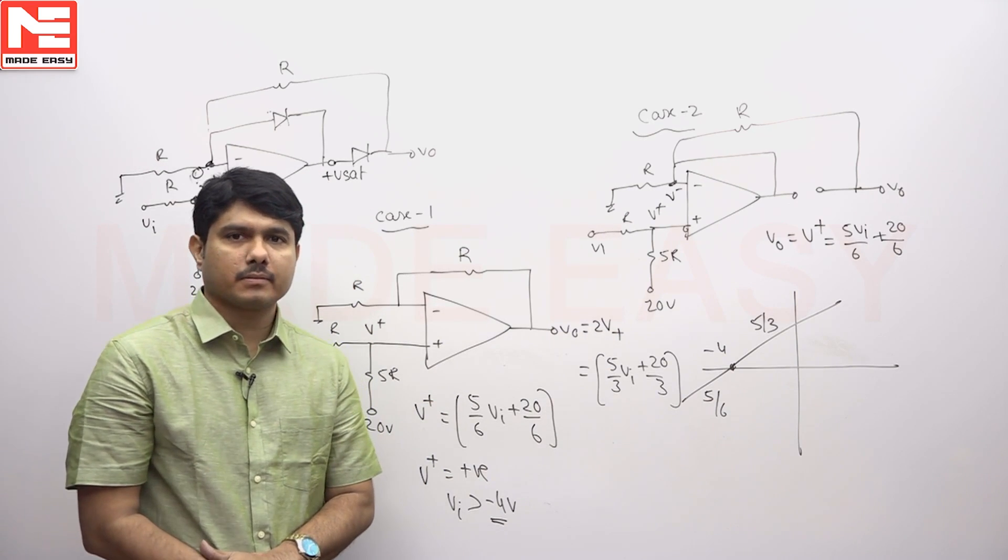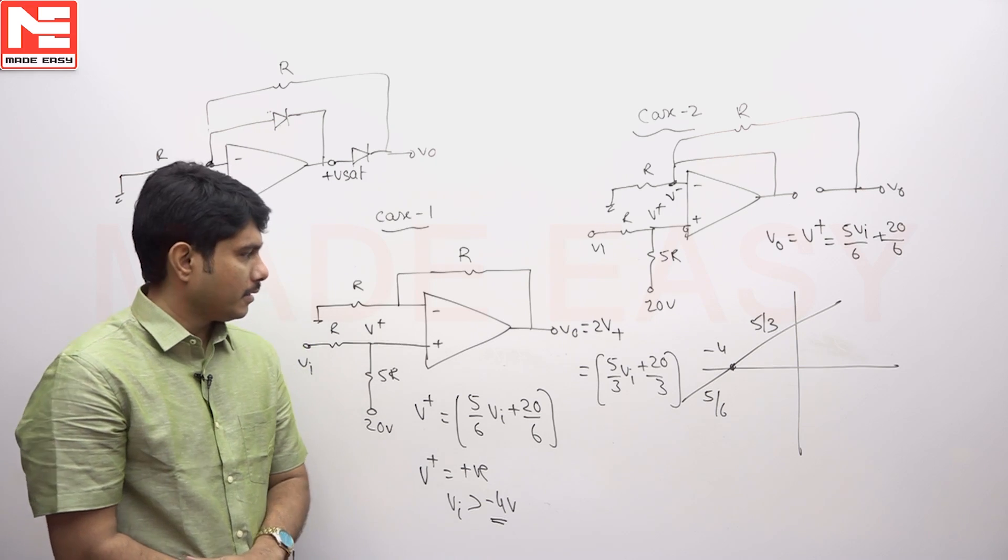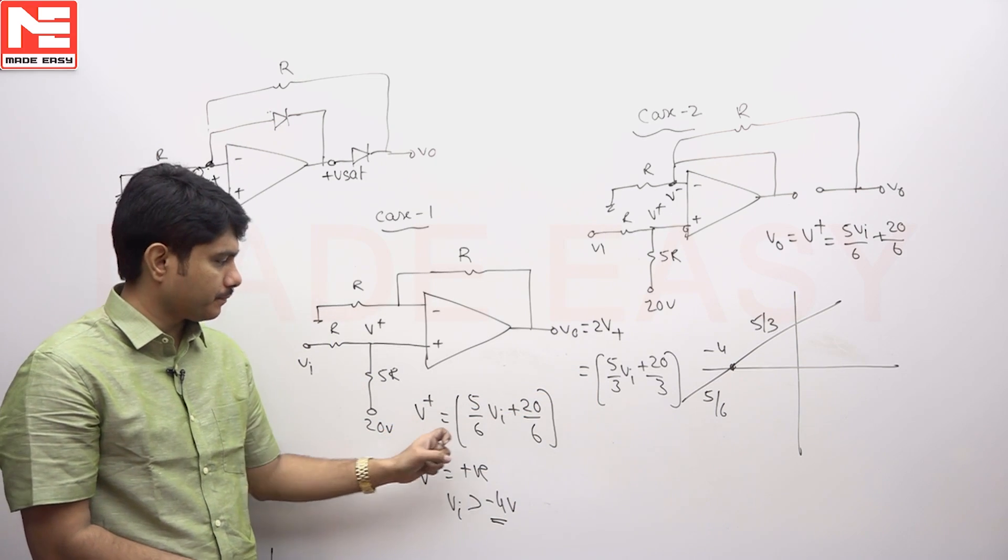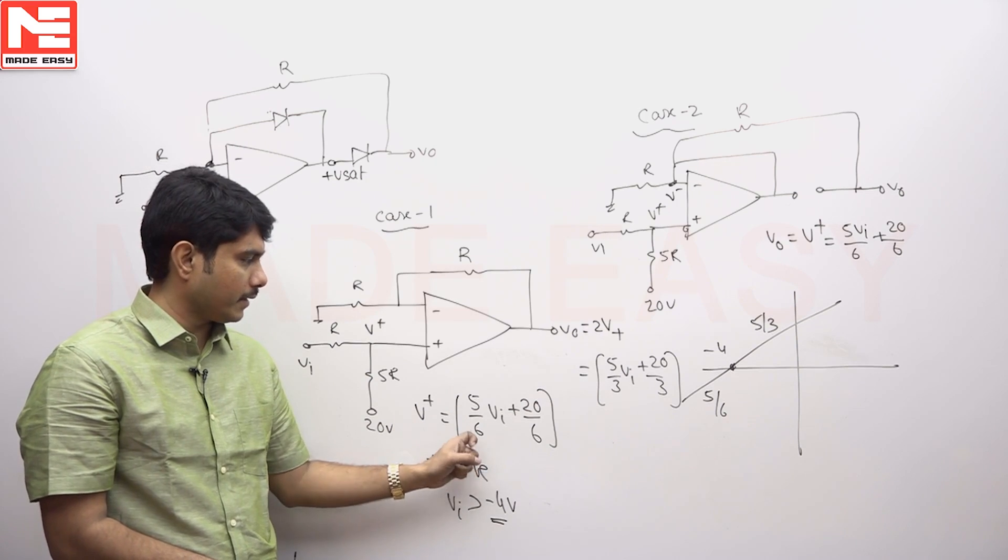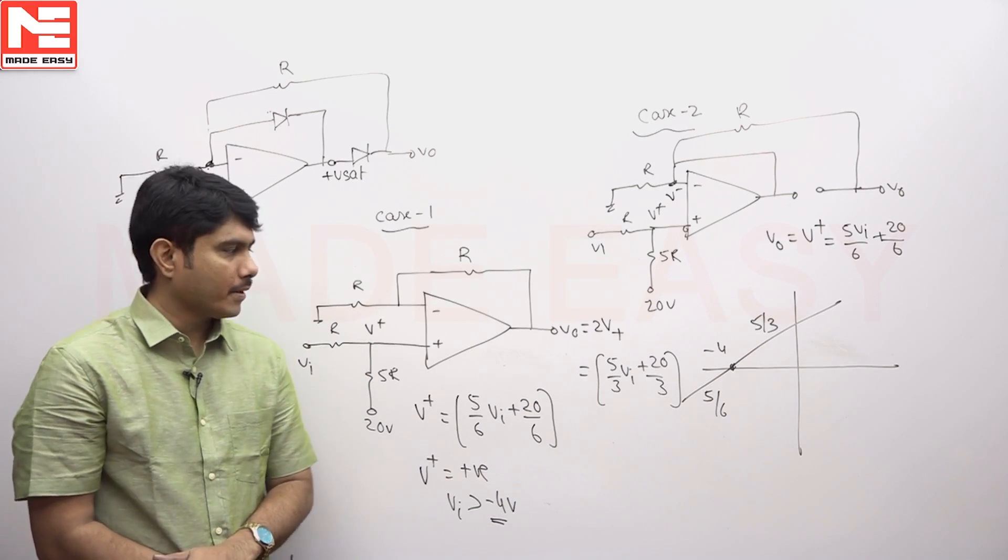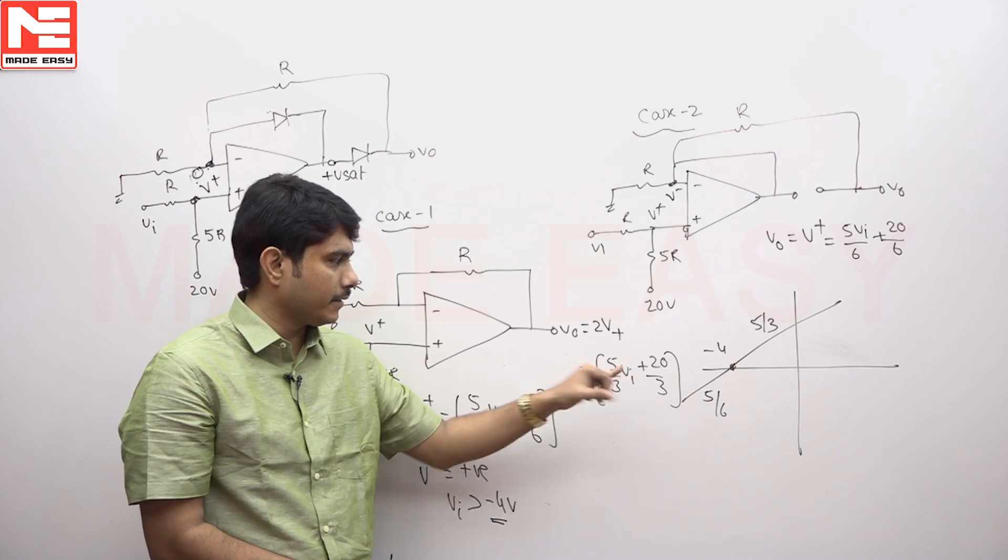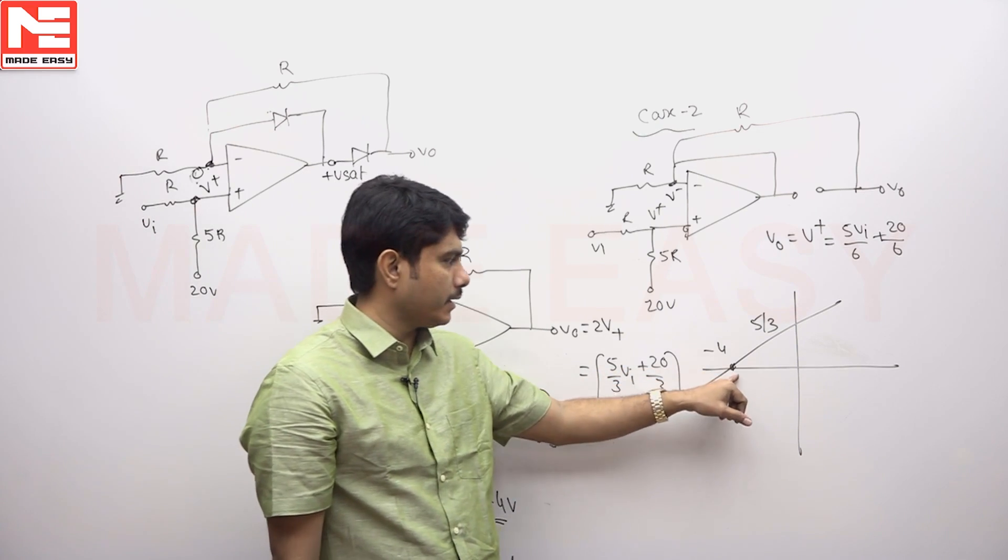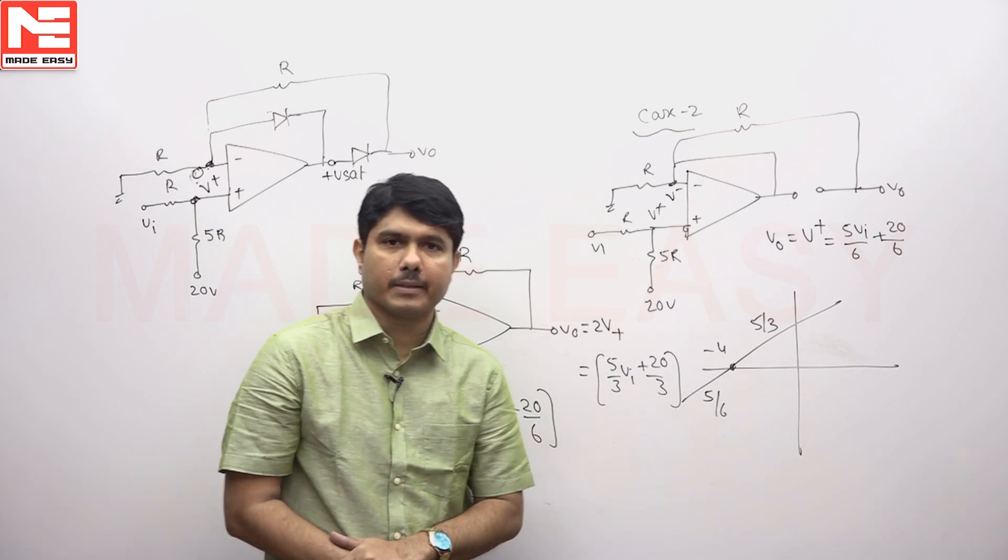So the answer is 2 into V plus. 1 plus RF by R1 is 2, 2 into V plus. The answer will change as V plus by 2, 2 is getting divided so 3. So the slope is coming 5 by 3 into VI. In the graph you can see above minus 4, the slope is showing 5 by 3.